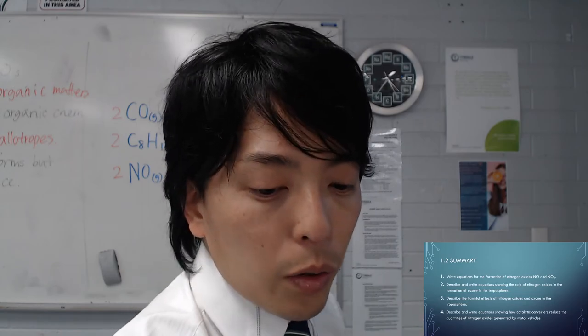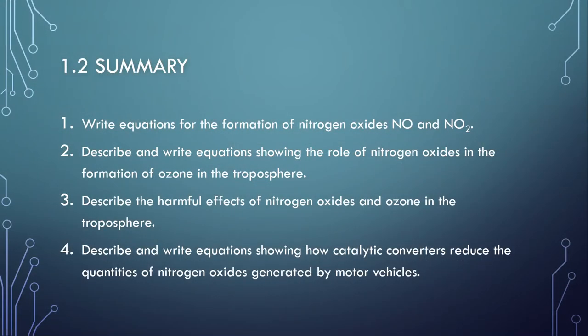Here's a summary that you can see. What you need to be able to do is to write equations for the formation of nitrogen oxides, which is NO and NO2. Describe and write equations showing the role of nitrogen oxides in the formation of ozone in the troposphere. Thirdly, you need to be able to describe the harmful effects of nitrogen oxides and ozone in troposphere. And finally, describe and write equations showing how catalytic converters reduce the quantities of nitrogen oxides generated by motor vehicles.